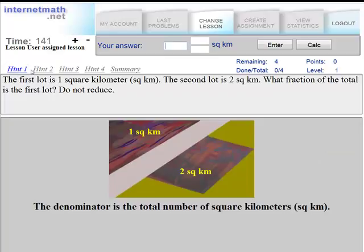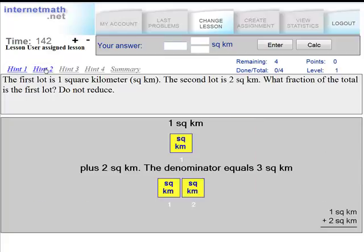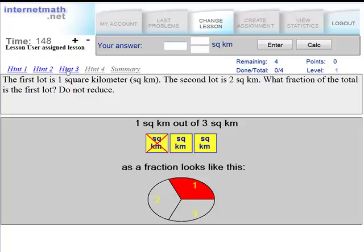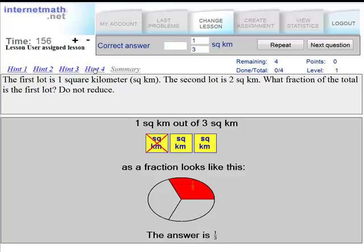On the next hint, notice that the pictures have changed to represent the different number of square kilometers. On hint 3, I see I have 1 square kilometer out of 3 square kilometers in both the pictures and visual model. On hint 4, I see my answer is 1 over 3.